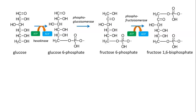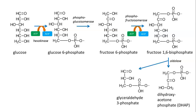The fructose 1,6-bisphosphate is picked up by an aldolase enzyme and split into two molecules: dihydroxyacetone phosphate (DHAP) and glyceraldehyde 3-phosphate (G3P). Next, a triose phosphate isomerase takes the dihydroxyacetone phosphate and transforms it into glyceraldehyde 3-phosphate. So the DHAP is short-lived, and in the end we really get two molecules of glyceraldehyde 3-phosphate from the fructose.